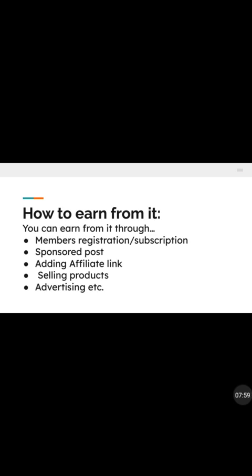If a member buys through your affiliate link, you stand a chance of earning money. Another way is selling online products — physical or digital products. Advertising is also another means of earning money depending on your membership strength. If you have more than 1,000 members, other people can pay you to advertise for them, and you make money. Those are some of the ways you can earn money from a membership site.